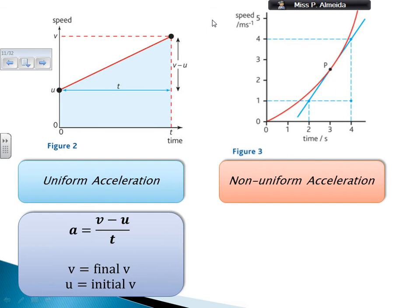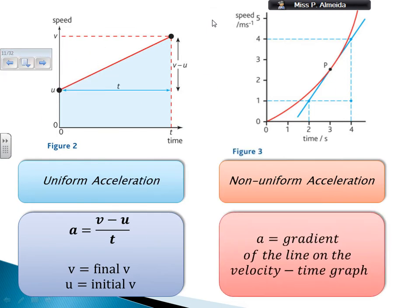If I have a non-uniform acceleration, I get the acceleration from the gradient of the graph. So I need to draw a tangent, a tangent line, and then from there, I'll calculate the gradient of the graph.